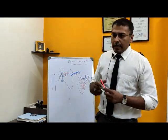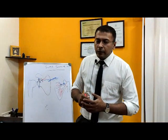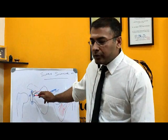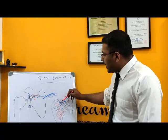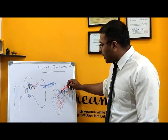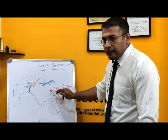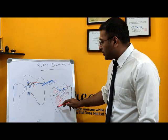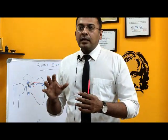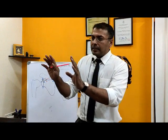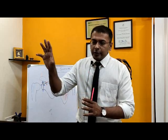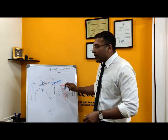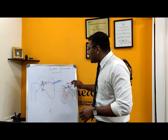An important surgical question is differentiating where exactly the problem is. When there is compression at the suprascapular notch, the patient will have weakness in both the supraspinatus — the lifting muscle — and the infraspinatus, which is the external rotator. If the patient has weakness and muscle wasting in both the supraspinatus and infraspinatus, then the problem is at the suprascapular notch.